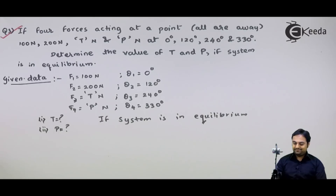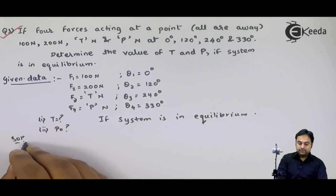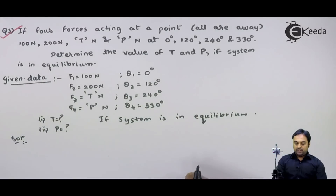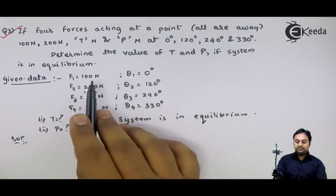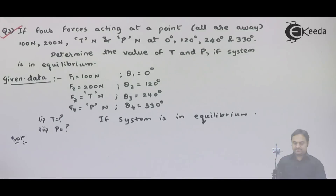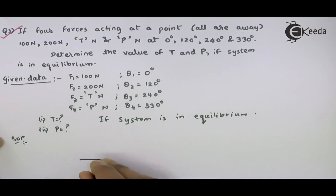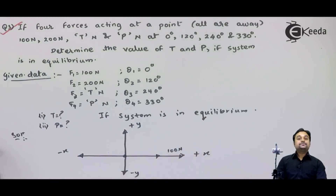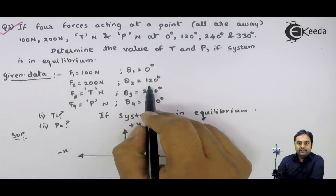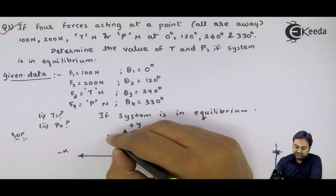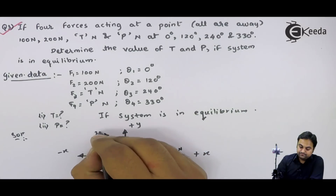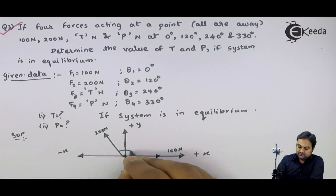Let us try to solve this question. Since the system is in equilibrium, the resultant is zero. Since the forces and their angles are given, we draw the diagram. We have 100 Newton at 0 degree, so the arrow is away from the center along positive x. Next, 200 Newton is at 120 degree — 90 degrees is vertical, so the remaining 30 degrees gives us 120 degree total. This is F2 = 200 Newton at 120 degree.